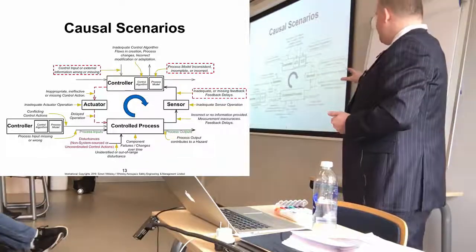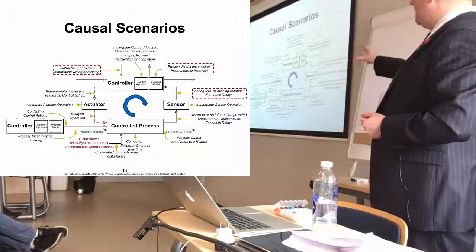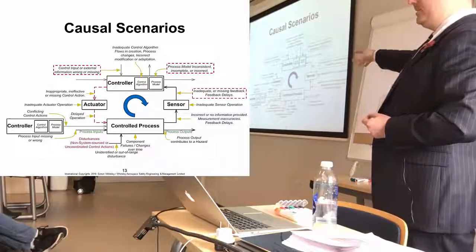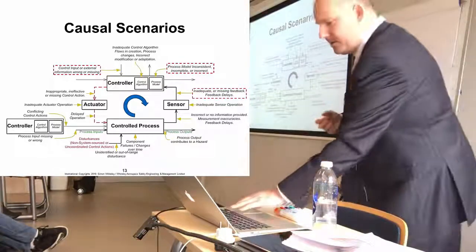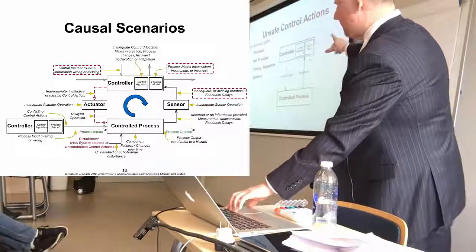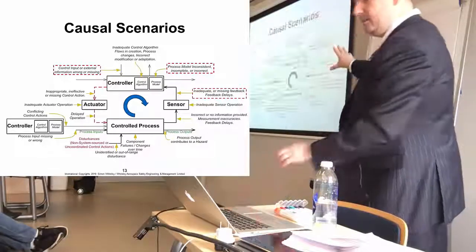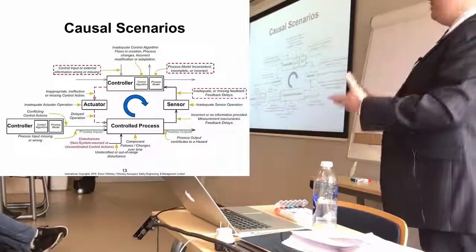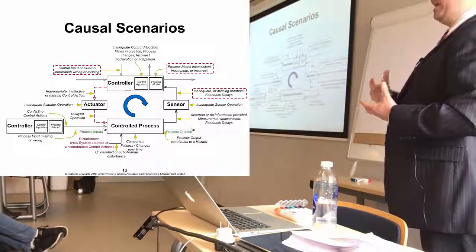Now this is just a representation of a control loop. I've made the actuators and sensors explicit. So in the previous picture, control actions and feedback, all I've done is expanded those and included the actual way that those control actions are implemented and how the feedback is provided.